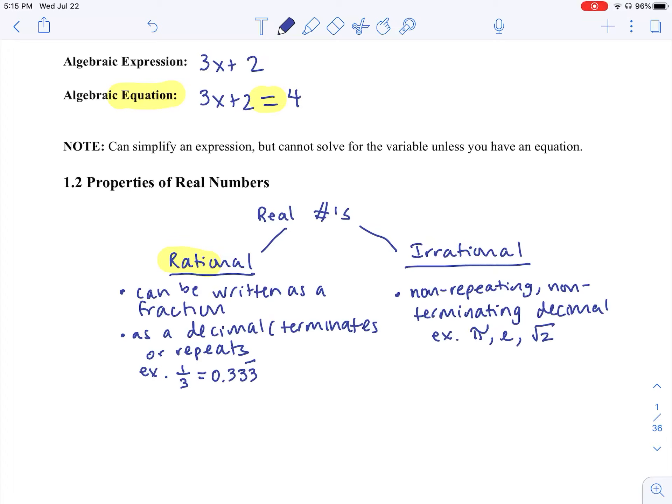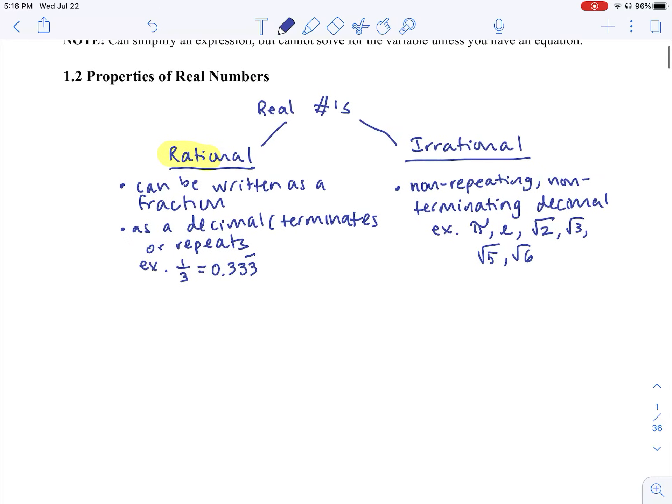So that's rational. But square root of 2, square root of 3, square root of 5, square root of 6—anything where you punch it into the calculator and you get a non-terminating, non-repeating decimal. Under the rational umbrella, we can be even more specific.